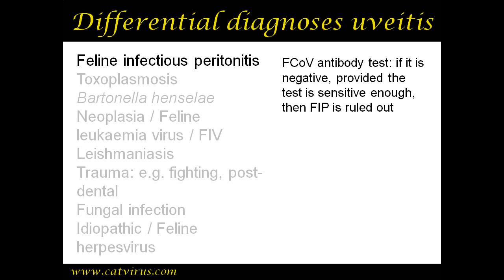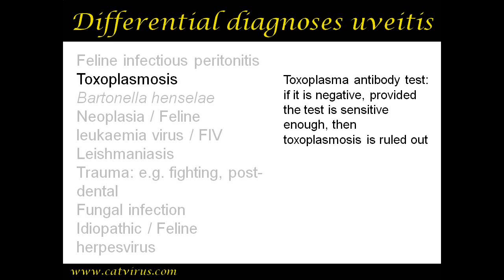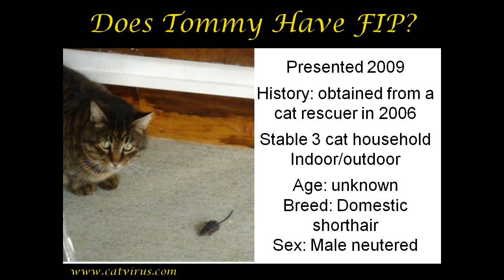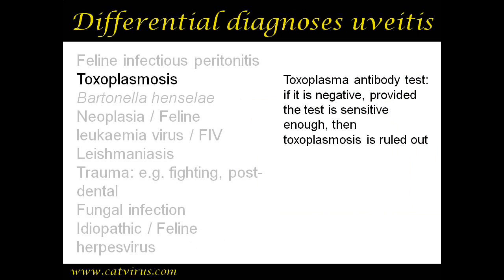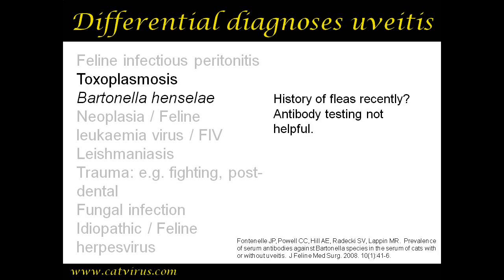Next on our list is toxoplasmosis, and here I'd like to remind you of two photos of Tommy from the very first video of the series, clearly showing our bad boy being mean to a little mouse. We know he was a hunter and could have eaten an intermediate host of Toxoplasma gondii, therefore we will be requesting a toxoplasma antibody test at the referral laboratory.